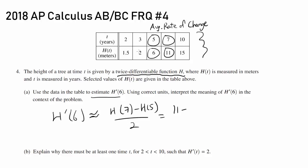H of 7 is 11, H of 5 is 6, divide by 2, and we get 5/2 meters per year. So we know that H'(6) is 5/2 meters per year. Let's make sure we don't mess up the units again. Using correct units, interpret the meaning of H'(6) in the context of the problem.